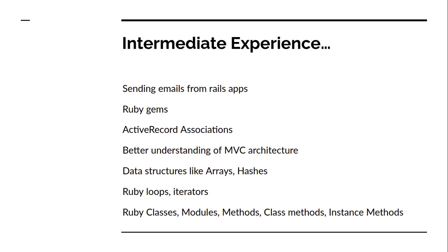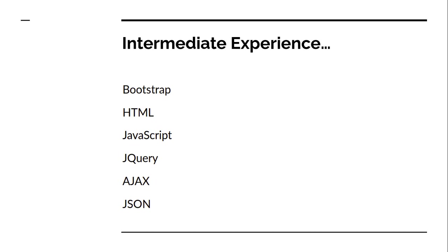If you are a full-stack Rails developer, you must also know Bootstrap, HTML, JavaScript, jQuery, Ajax, and JSON. You must deal with UI components using Bootstrap or other frameworks like Tailwind CSS or Foundation CSS, sometimes custom CSS as well. You need to know how to write HTML tags, reflect Rails data into ERB templates — the default template engine in Rails — and you must know how to send Ajax requests from the browser to your server.